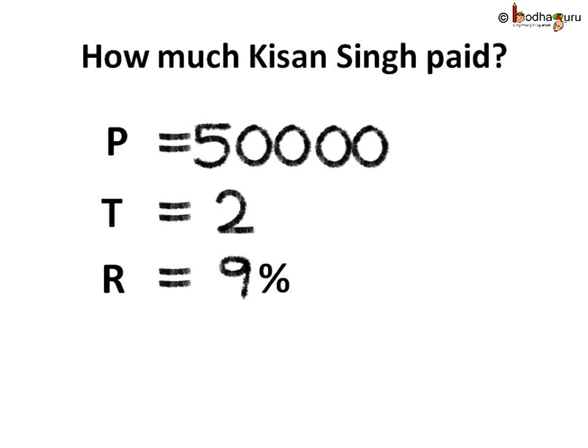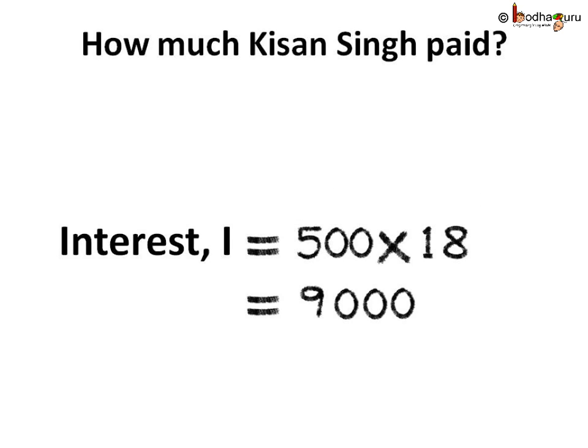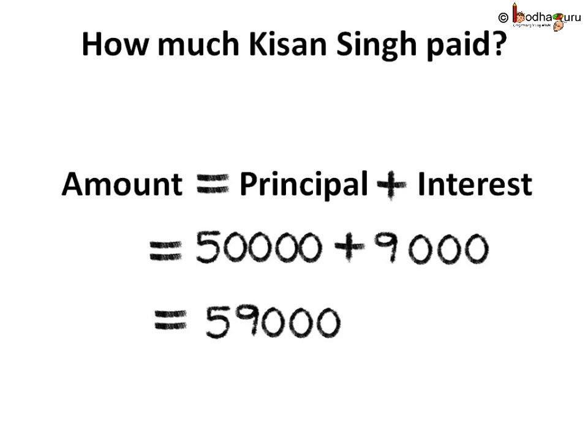We are going to use these values to find out the interest. Interest is P multiplied by T multiplied by R divided by 100, that is 50,000 multiplied by 2 multiplied by 9 divided by 100. That gives us 50,000 divided by 100 equals 500, and 9 multiplied by 2 equals 18, so 500 multiplied by 18 equals 9,000. At the end of 2 years, the total amount to pay back is 50,000 plus 9,000 equals 59,000 rupees.